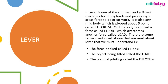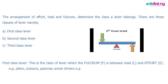To understand levers, we must know three key components: the force applied, called effort; the object being lifted, called load; and the point of pivoting, called the fulcrum. The arrangement of this effort, load, and fulcrum determines the class a lever belongs to.